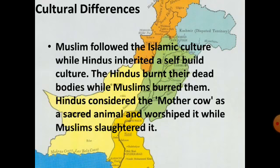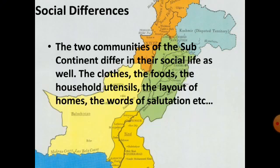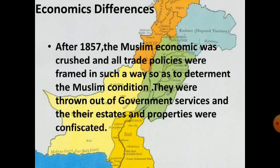Social differences are also evident in terms of clothes, food, and way of living style. After 1857, the Muslim economy was crushed and all trade policies were framed in such a way as to deteriorate the Muslim condition. They were thrown out of government services and their estates and properties were confiscated.